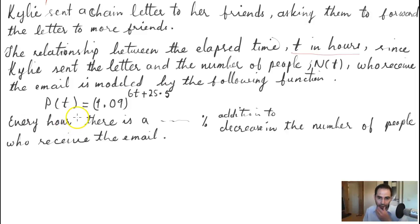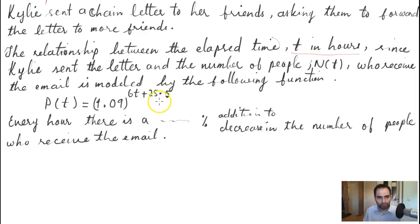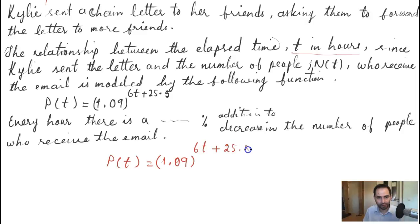We want to answer this question: every hour, there is a such-and-such percent addition to or decrease in the number of people who receive the email. In order to answer this, we need to take a look at the function and determine whether the number of people is increasing or decreasing, and by what percentage.